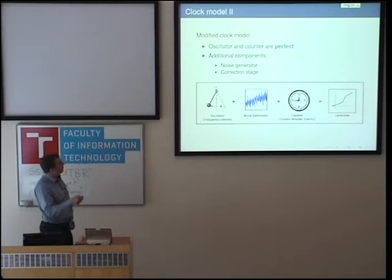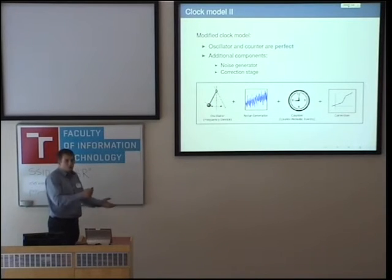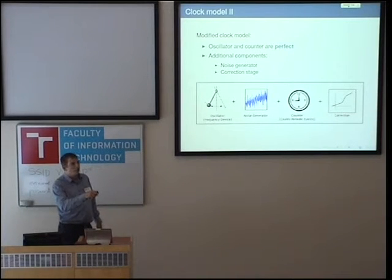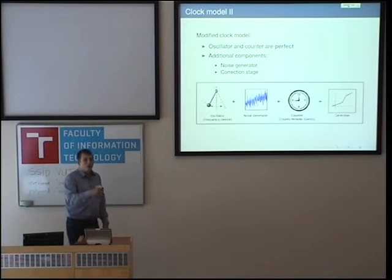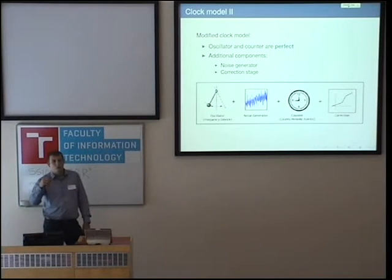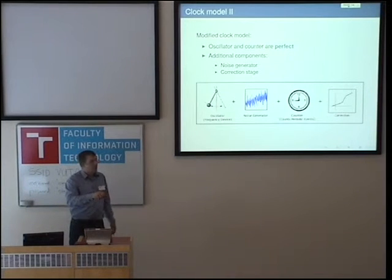My modified simulation model for a digital clock looks as follows: I have an absolutely perfect oscillator, then a noise generator that adds some kind of noise, a perfect counter, and finally a linear correction stage. The linear correction stage is inspired by how real PTP network interface cards work. For example, Intel network cards that have PTP support provide a register where you can write a correction factor. From that point in time, the local clock will scale with this factor.